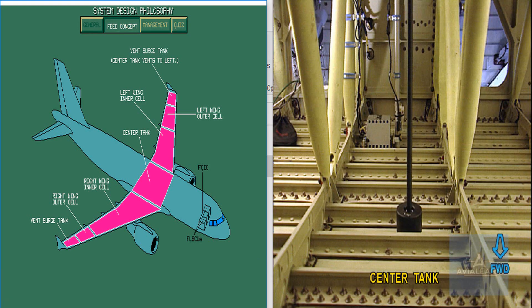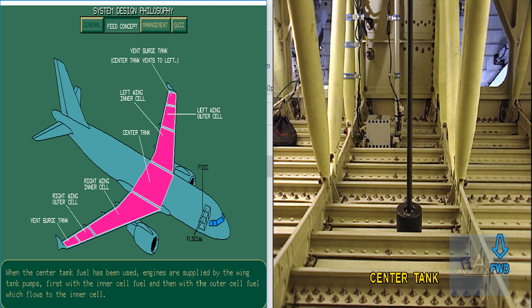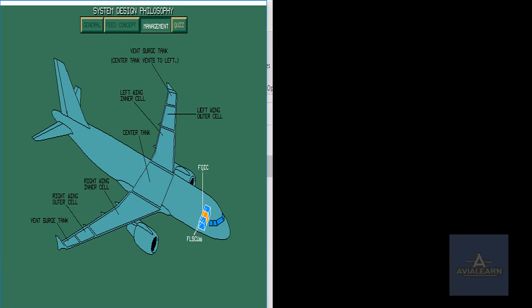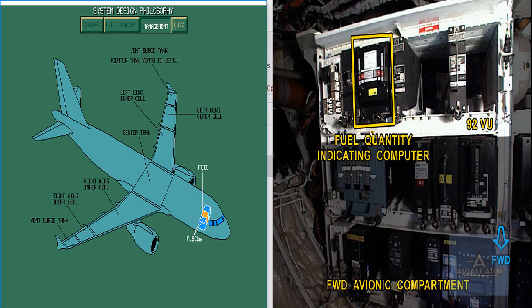Engines are supplied by the center tank fuel via the center tank pumps. The different functions of the system are fuel level and temperature sensing, fuel transfers, fuel recirculation, refuel/defuel control and monitoring, indications, warnings and tests.